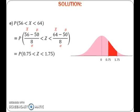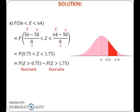To find probability, refer to the standard normal distribution table. Remember that the table gives probability of z greater than a certain positive value. To get probability of z between 0.75 and 1.75, take probability of z greater than 0.75 minus probability of z greater than 1.75. Read probability of z greater than 0.75 and probability of z greater than 1.75 from the table and calculate the probability.